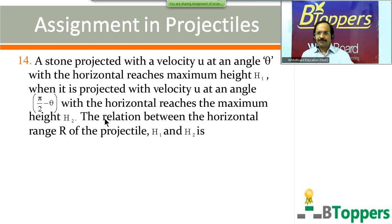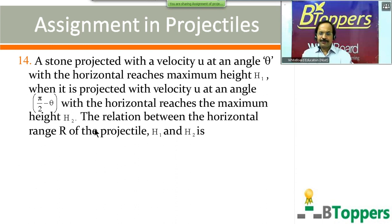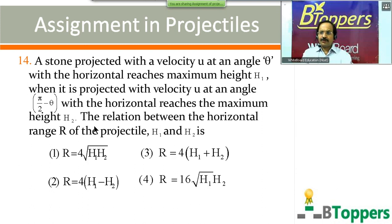Question number 14: a stone projected with velocity u at angle theta with the horizontal reaches a maximum height h1. The relation between the horizontal range R of the projectile, h1, and h2 is — four options on screen each expressing range in terms of h1 and h2. This question comes from one of the special cases already discussed. Come on, try to answer.